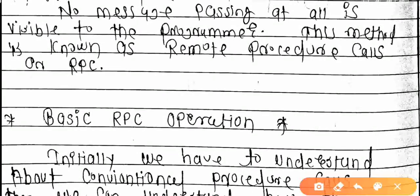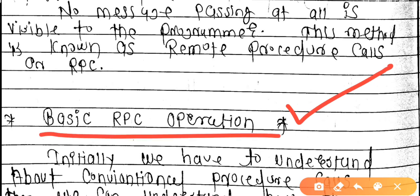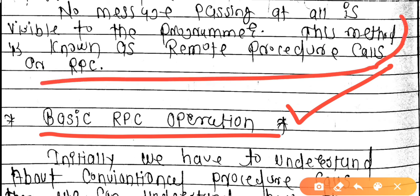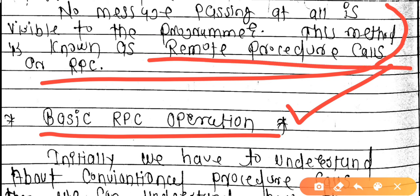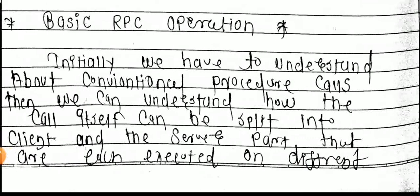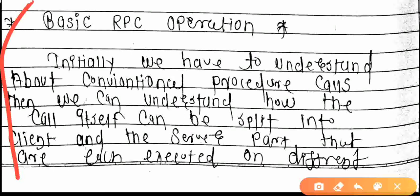An important point: the first key concept in RPC is basic RPC operation — how does an RPC operation happen? The important highlight here is that no message passing at all is visible to the programmer. All the zero-one binary-level communication is hidden from the application layer. This is the core idea of Remote Procedure Calls.